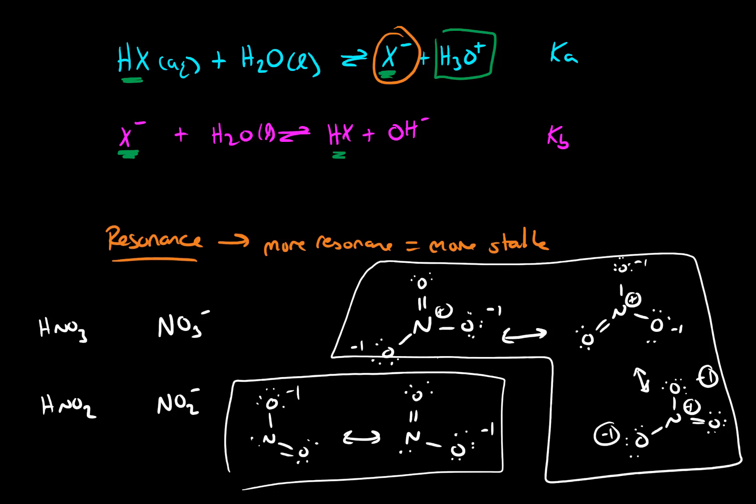So nitrate is more stable than nitrite. So for nitric acid, the products are going to be favored more so than the products with nitrous acid, which is why nitric acid is a stronger acid than nitrous acid, because of the stability of the base, which we predict based on the number of resonance structures.